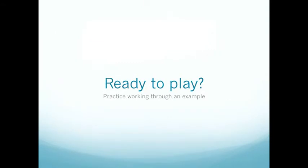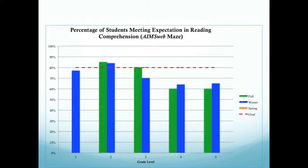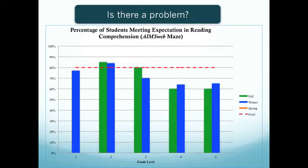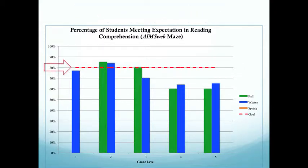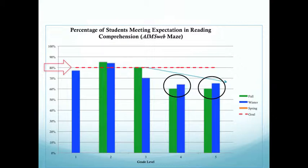So are we ready now to start working with some data? Here's a graph looking at the percentage of students that are meeting expectations in reading comprehension. Is there a problem? If we go by the general guideline that we want 80% of students to be meeting expectation, we might start being a little concerned with our third graders, getting much more concerned with our fourth graders, and then being very concerned with fifth graders as well. We see the trend is going down when we really would want this to be at or above 80%.